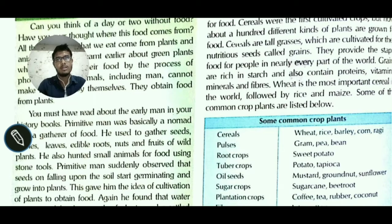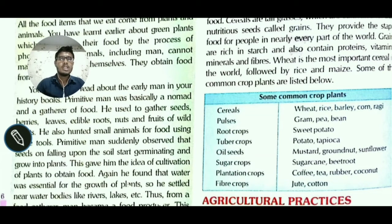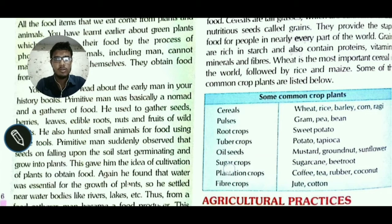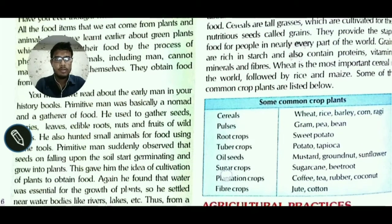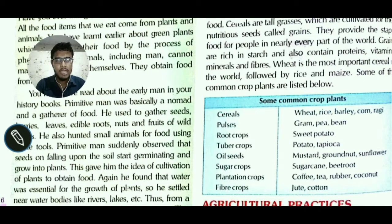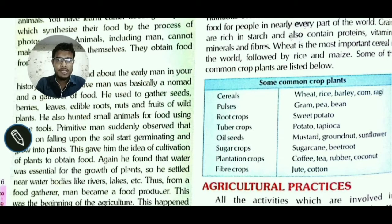They obtain food from plants. You must have read about early man in your history books. Primitive man was basically a nomad — meaning he had no permanent house — and a gatherer of food: berries, leaves, edible roots, nuts, and fruits of wild plants.